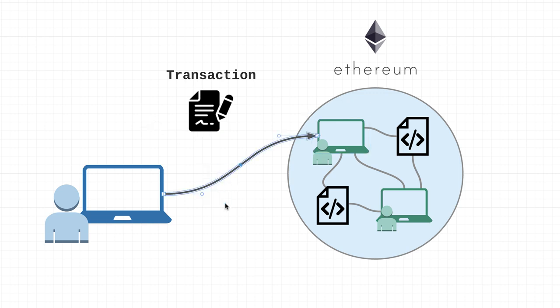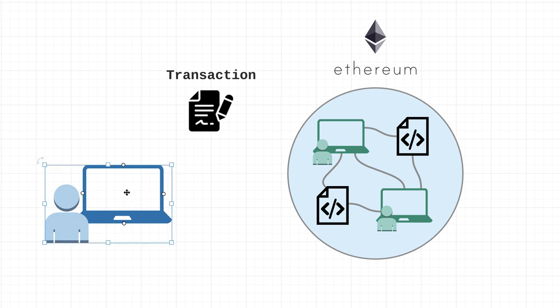Transactions can also be instructions to the network to execute smart contracts. An important point is that all transactions are always initiated by an EOA — in other words, by a human or an account with a private key.